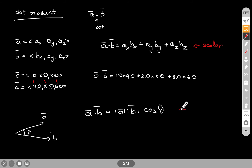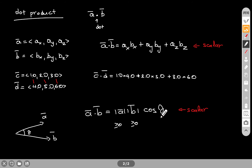This is still going to give you a scalar — it's still the same dot product calculation. Now there is something interesting here: the magnitude of a vector is always positive or zero, and the magnitude of B is always positive or zero. The cosine of theta, though, can go from minus one to plus one. So whether the dot product is positive or negative depends on the angle theta between the two vectors.